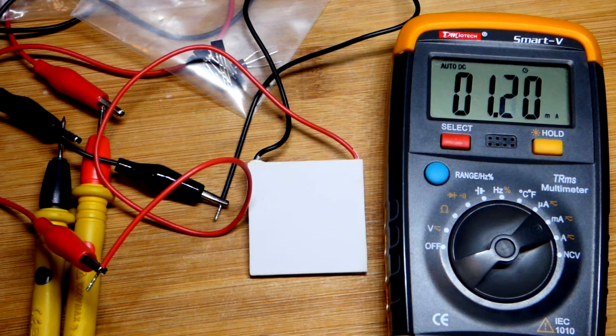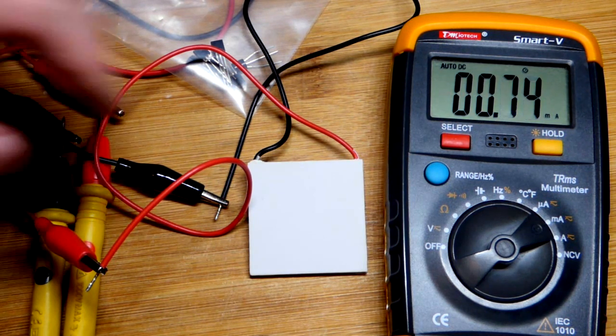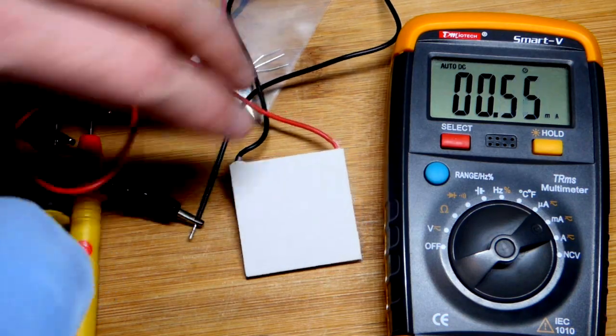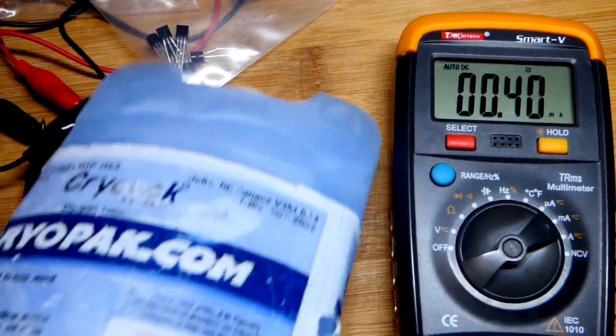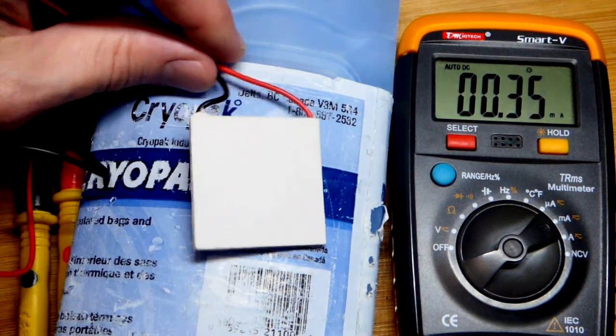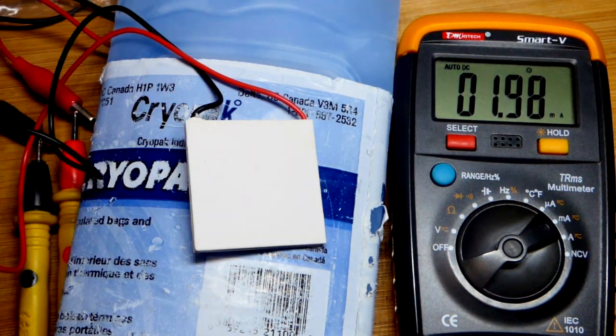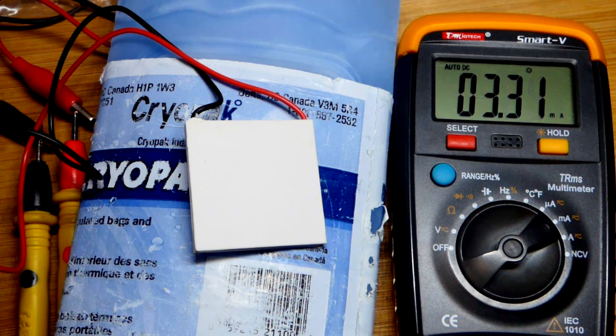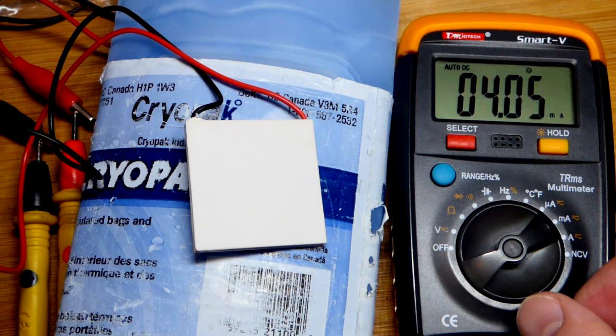Now we're going to step it up even more. I have ice packs and I'm going to put those on the bottom. It's cooling my hand down. So we just have the temperature of the air versus the ice pack. You can see that we got that current there.